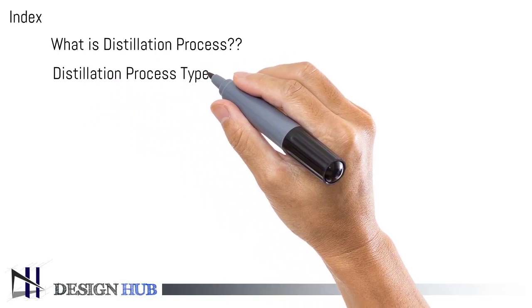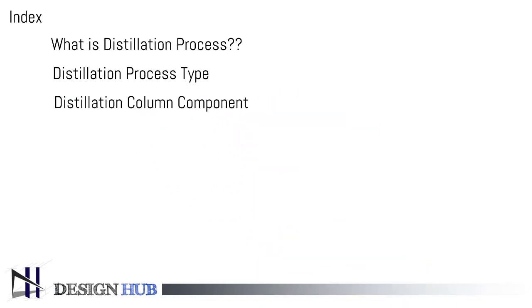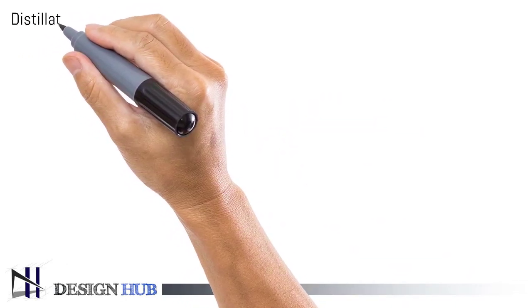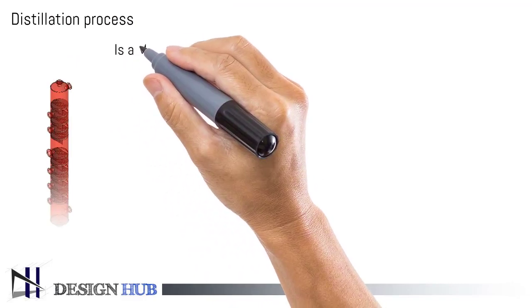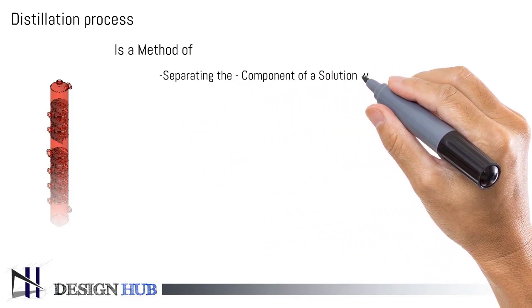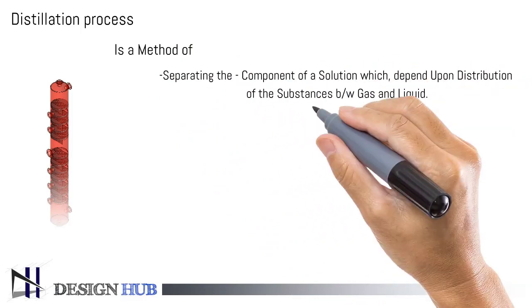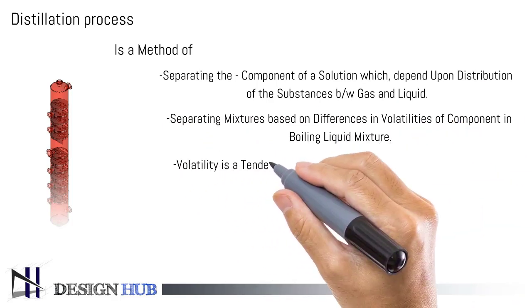This video is an introductory part on distillation columns. First, we will discuss what the distillation process is. Basically, distillation is separating the components of a solution, which depends upon the distribution between gas and liquid phases. Distillation efficiency is based on the volatility of the components.